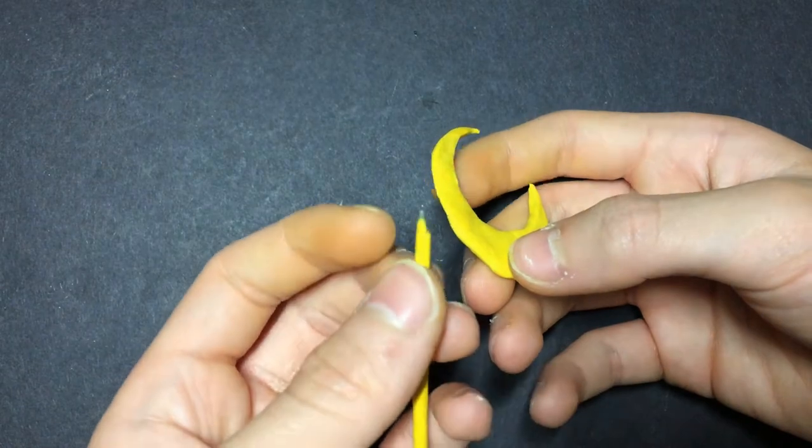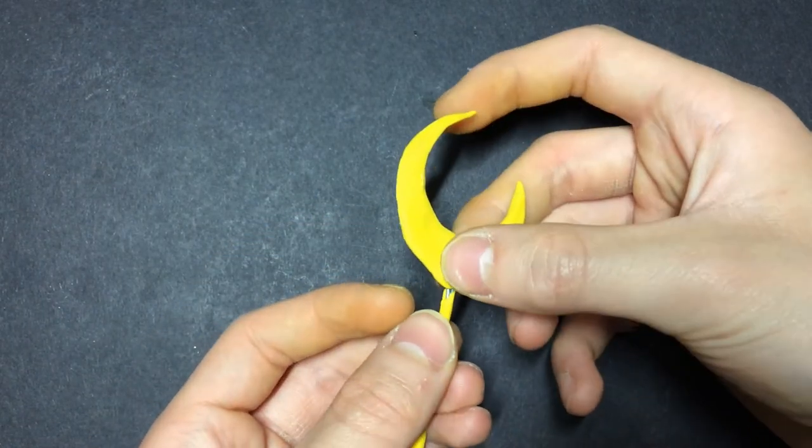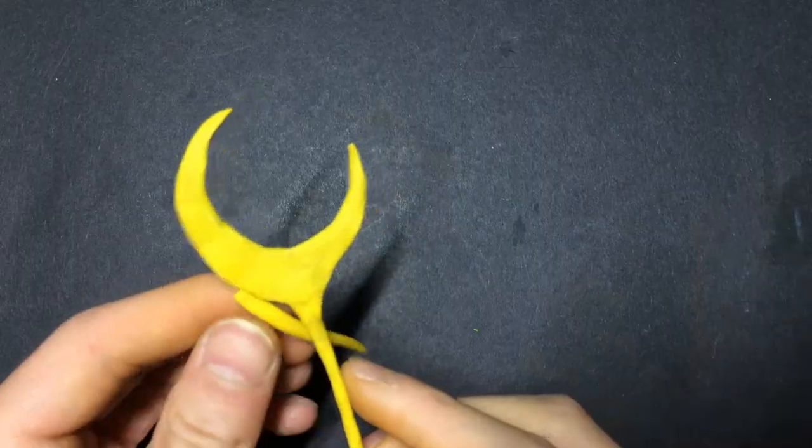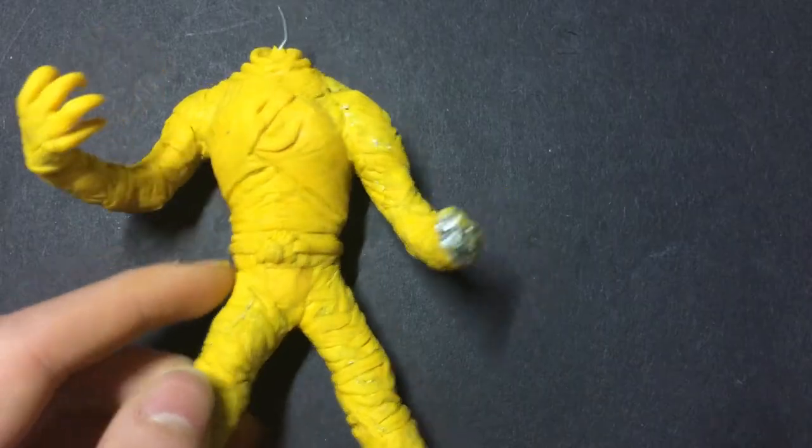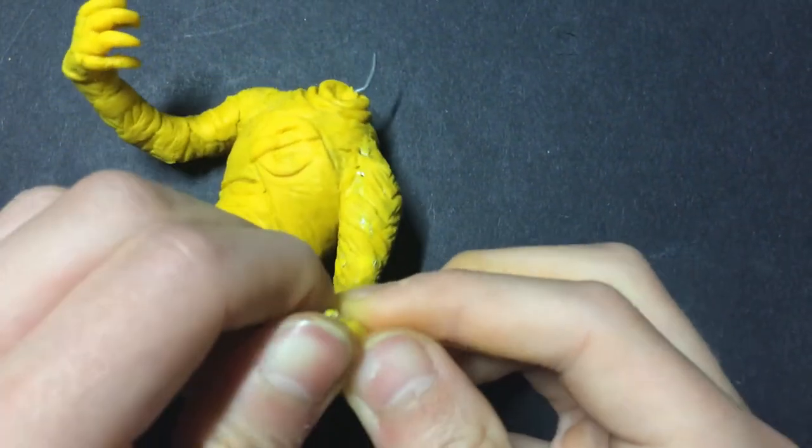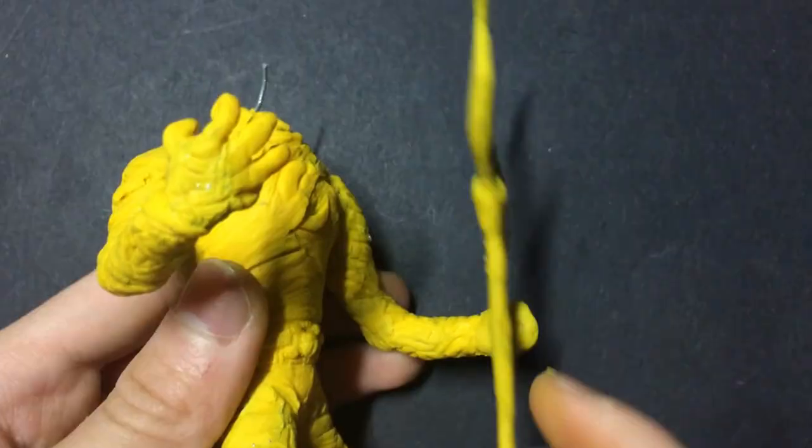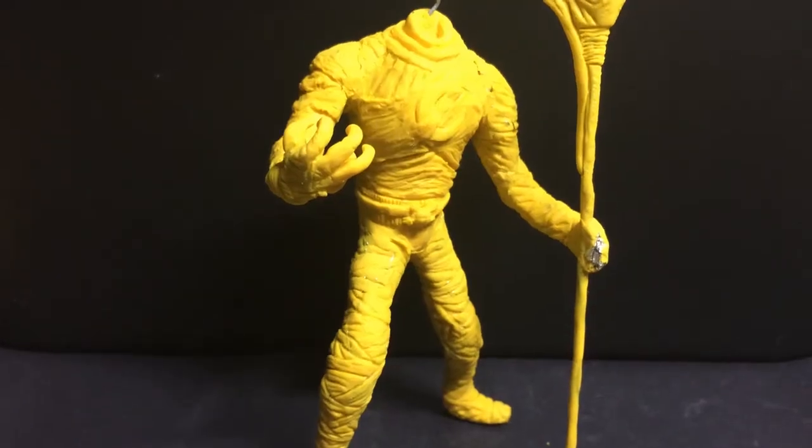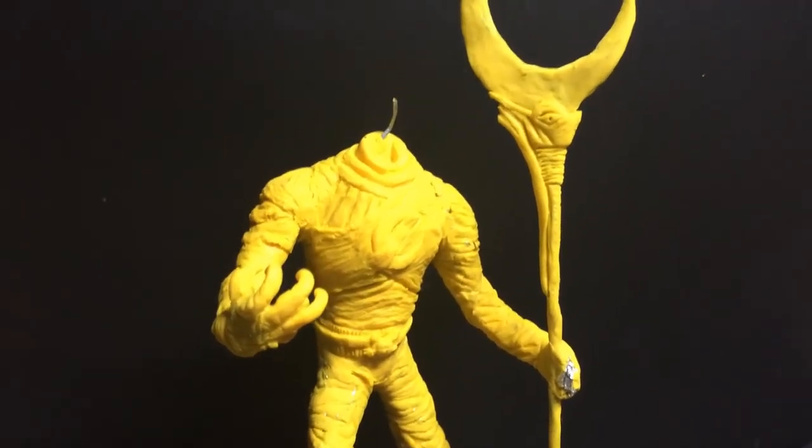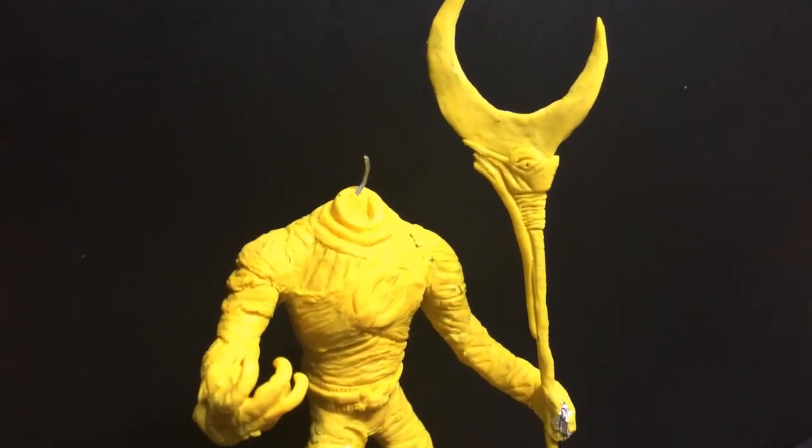You can then smoosh the two pieces together and give it the twirl test to see how stable it is. And now you can just add details and texture. Once baked, you can attach the staff to the hand with a big ol' blob of Fimo, which actually allows this thing to stand. Just make sure not to breathe too heavily when you're near this.